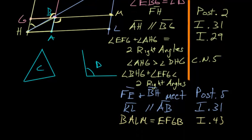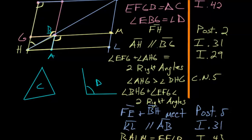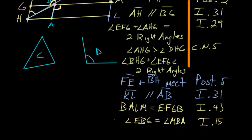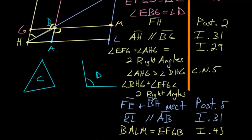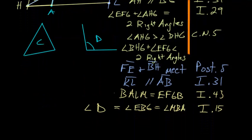We also know that angle EBG and angle MBA are equal to each other since they're vertical angles — this is due to Book 1 Proposition 15. Since EBG is equal to angle D that we started with, and EBG equals MBA, we know angle MBA is also equal to angle D. Since parallelogram BALM equals parallelogram EFGB, and EFGB equals triangle C, then by Common Notion 1, parallelogram BALM is also equal to triangle C.